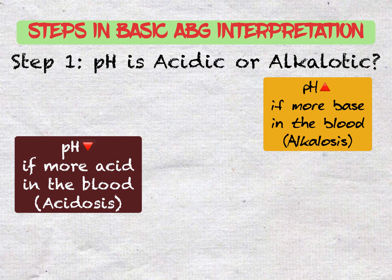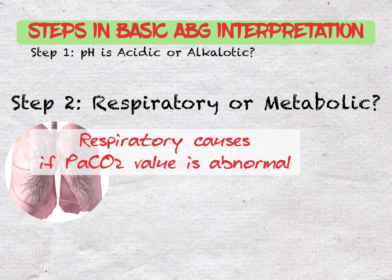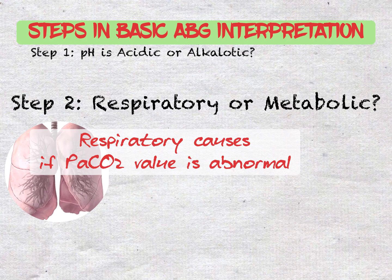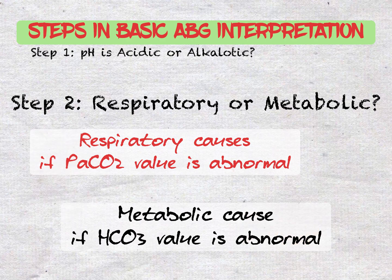The second step is knowing if it is respiratory or metabolic. After you've determined whether the sample is acidic or alkaline, you need to find out if it's due to respiratory or metabolic causes. If the cause is respiratory, the PaCO2 will be out of the normal range, whereas for metabolic problems, the HCO3 will be abnormal.